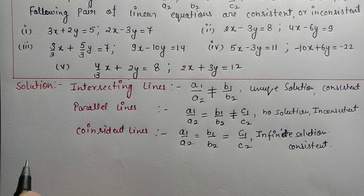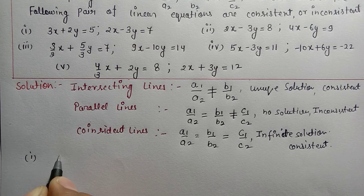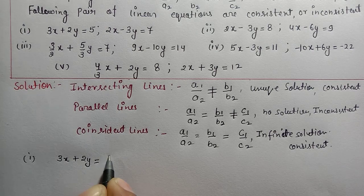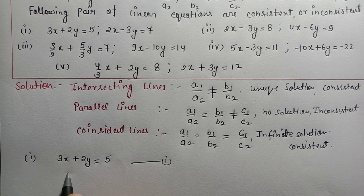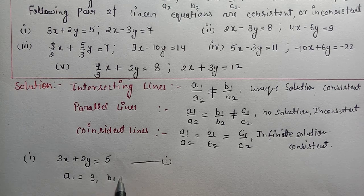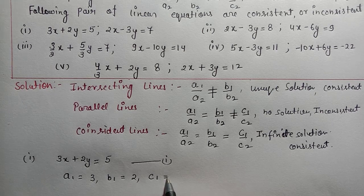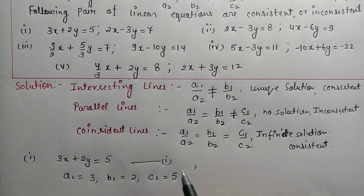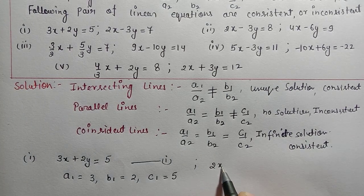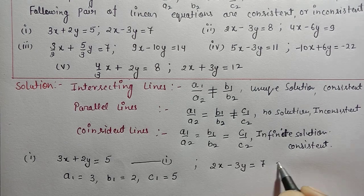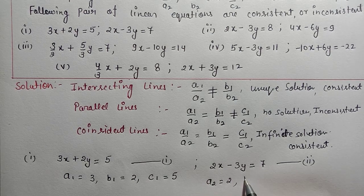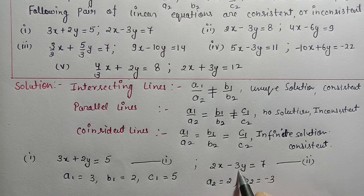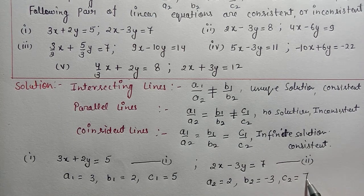The first part: equation 1 is 3x + 2y = 5. We find the coefficients: a1 = 3, b1 = 2, c1 = 5. The second line is 2x - 3y = 7, equation 2. We find: a2 = 2, b2 = -3, c2 = 7.